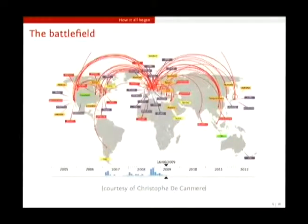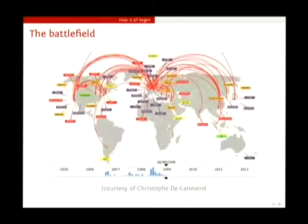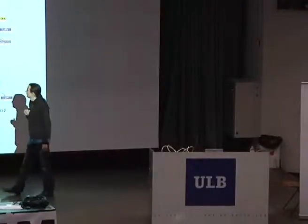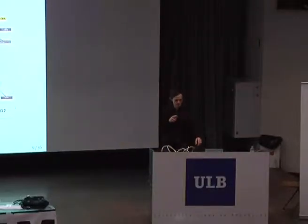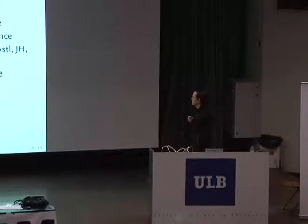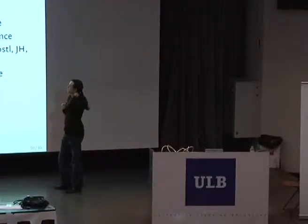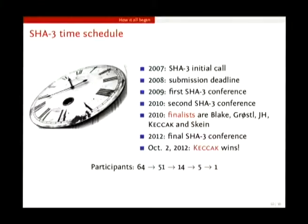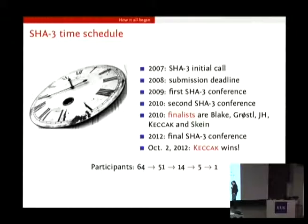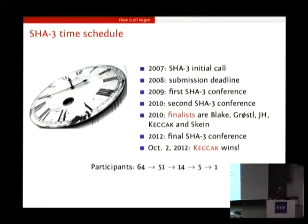Of course, we were not the only ones to answer this call. There were many of them, actually 64. There were many known names, like Ron Rivest, the designer of MD5. We also saw people who designed other hash functions, and IBM also participated and designed Fu. So in the end, we were 64. The competition started in 2007, with the first conference in 2009. There was a selection process, and after three conferences, NIST selected 14 second-round candidates, then finally five third-round candidates. And then recently, in October 2012, they selected Keccak.